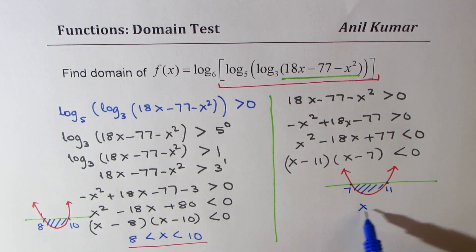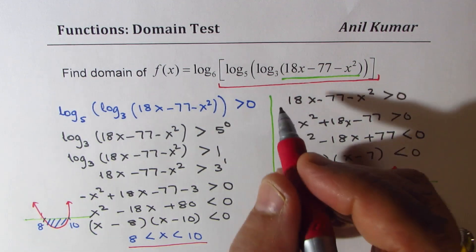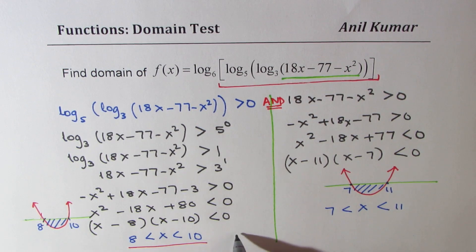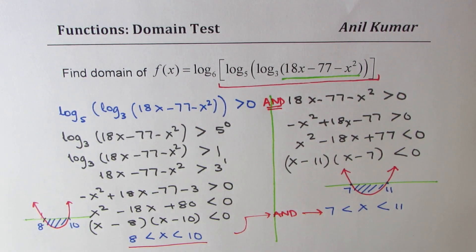Now that means that x should be between 7 and 11. Now we have to see the condition which is AND. Both should be true. So the condition is AND so this should be true and that should be true.